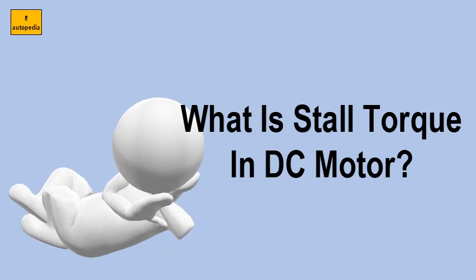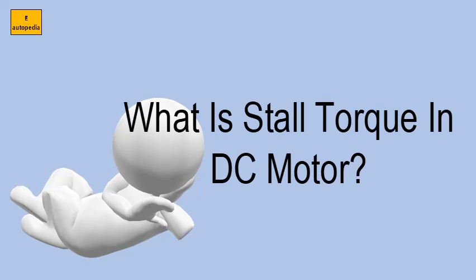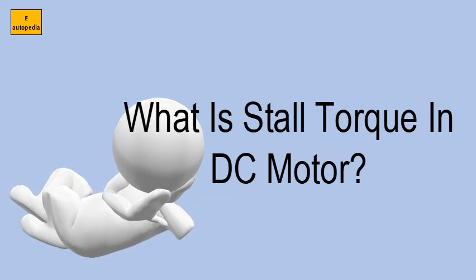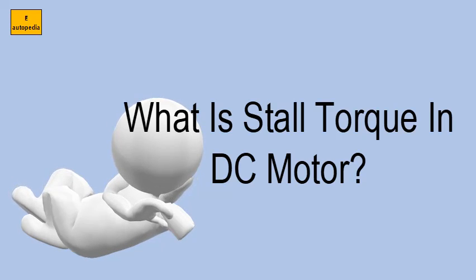What is stall torque in a DC motor? Starting torque is the maximum torque that can be produced by a motor in order to start rotational movement of the load. Stall torque is the maximum torque that can be applied to the shaft and cause the motor to stop rotating.